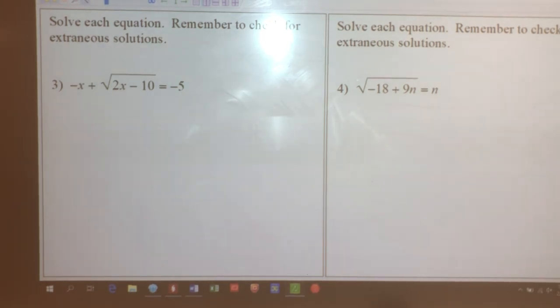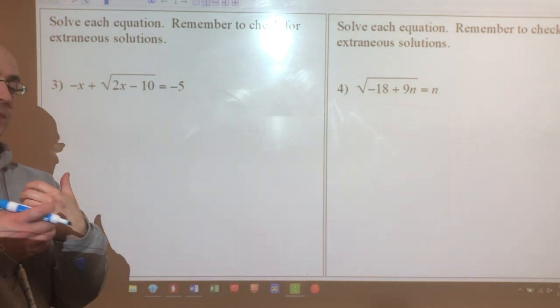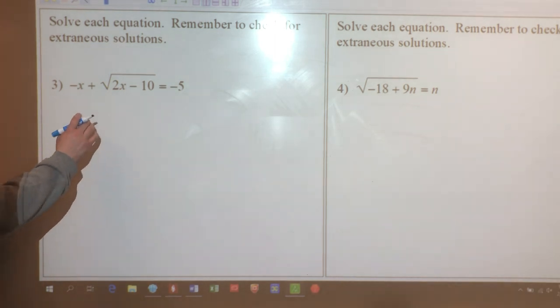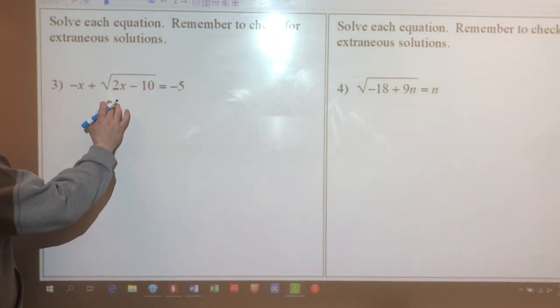Video 2, just like the first one but better. Alright, so when I solve the first problem here, this is where extraneous solutions are going to come into play because I'm going to end up with a quadratic. Let's try this first one. Remember, I'm trying to isolate the radical sign, so I'm going to add x to both sides.